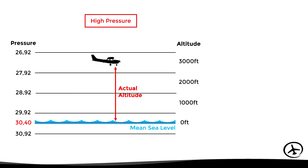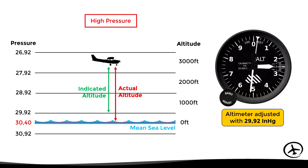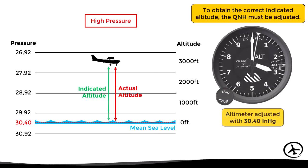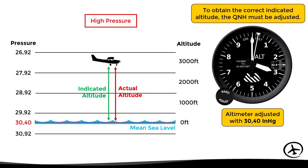In this situation, if our altimeter is still adjusted with the default setting of 29.92, the indicated altitude will be lower than the actual altitude. So in order to obtain the correct altitude reading, the altimeter must be adjusted with the current QNH — in this case, 30.40.